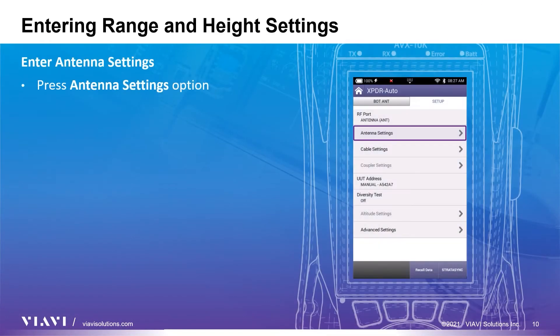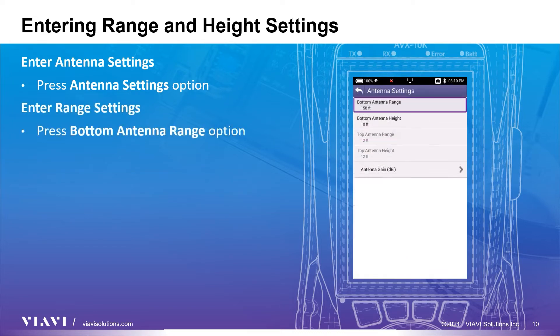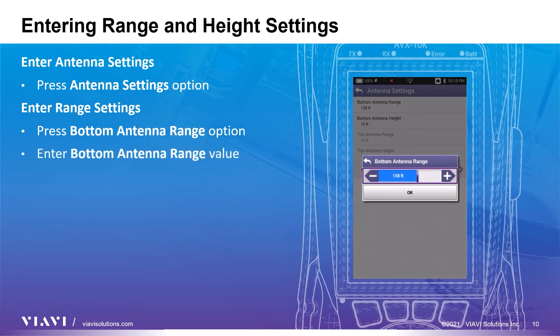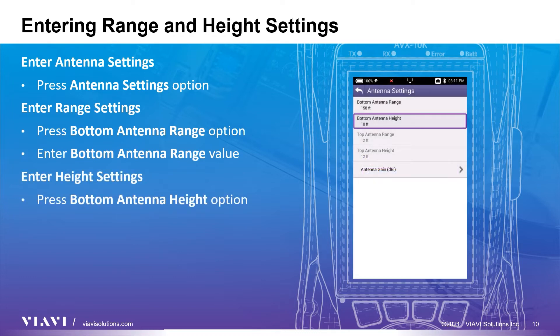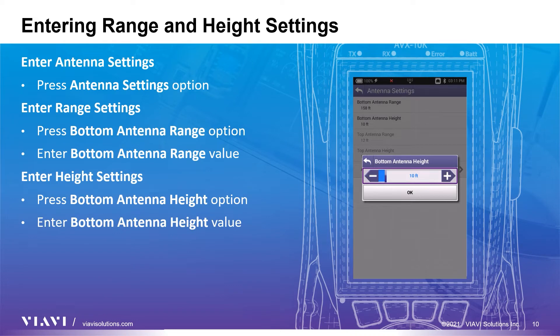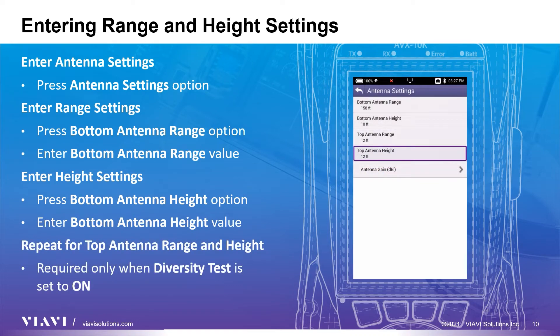Now that we have the range and height values, let's enter them into the AVX10K. Press the Antenna Settings button to see the range and height option selections. It is important to accurately enter the range and height values to generate the best test results. Press the bottom antenna range option and enter the bottom antenna range value. Press the bottom antenna height option and enter the bottom antenna height value in feet. Repeat the process for the top antenna height and range if diversity test is set to on.